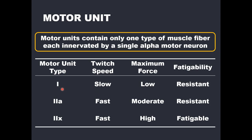Type 1 motor units with their type 1 fibers have a comparatively slow contractile speed. They also have a relatively low force generating capacity — they are the weakest of the three types. However, type 1 motor units, particularly the type 1 fibers, are fatigue resistant, meaning they are able to produce repeated contractions and force, albeit low amounts of force, for generally a longer period of time. So type 1s are less fatigable.